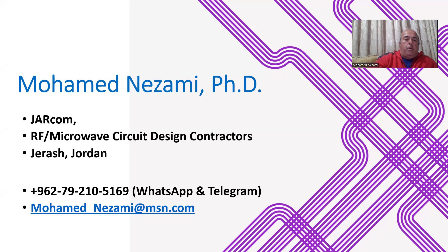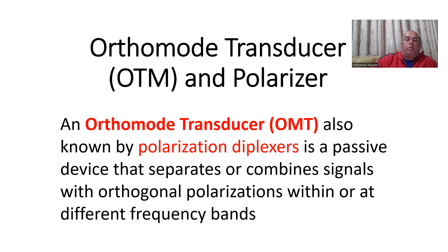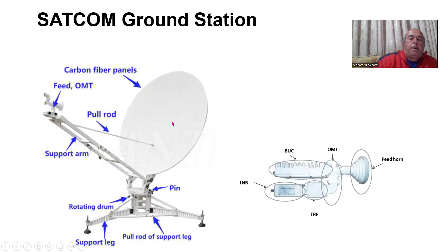We talked last time about OMTs. As a reminder, OMT — orthomode transducer — and polarizer: they're both basically used to combine, split, separate, filter out, demultiplex, or combine two signals that are orthogonally polarized. They could be at the same frequency or different frequencies, and could have the same modulation or different modulations. In the case of SATCOM ground stations or SATCOM transponders, the devices are used in the front-end feed of the antenna.